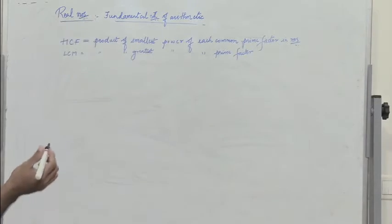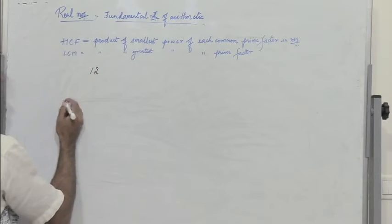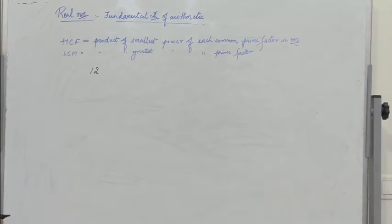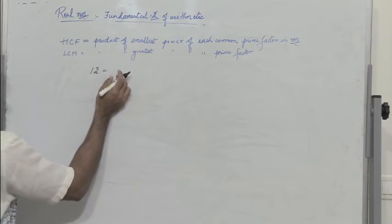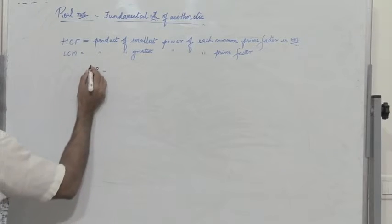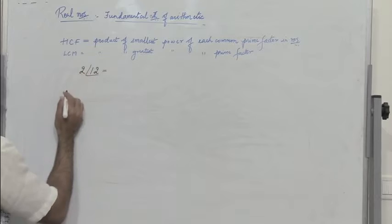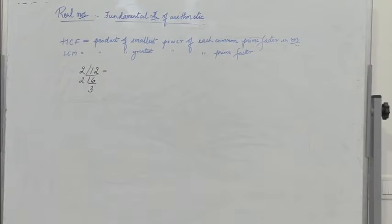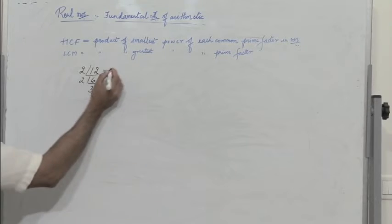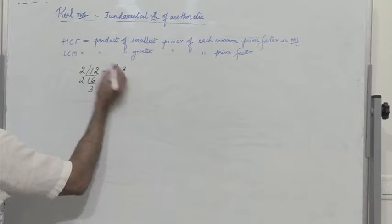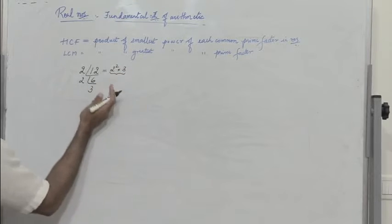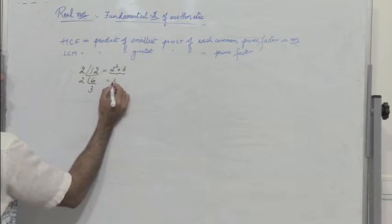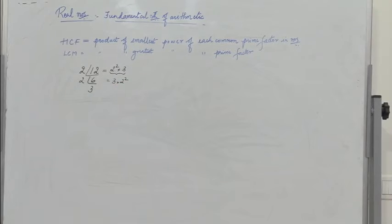What does this mean? Given any composite number — let's take 12 — we can represent it as a product of prime numbers. I divide 12 by 2 to get 6, then by 2 to get 3. So 12 can be written as 2 squared into 3. This representation is unique, though the order may differ — I can write it as 2² × 3 or as 3 × 2².